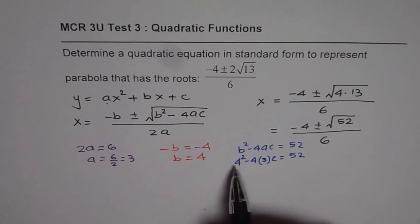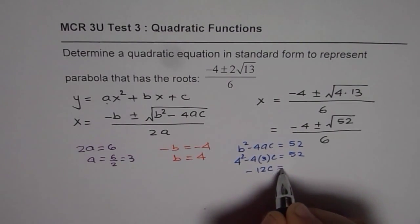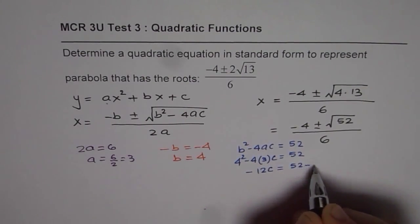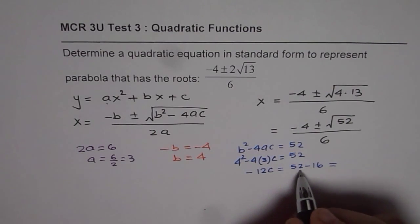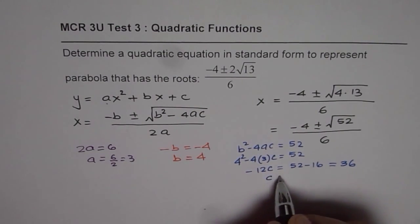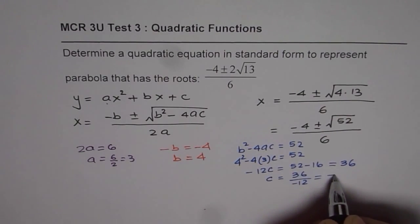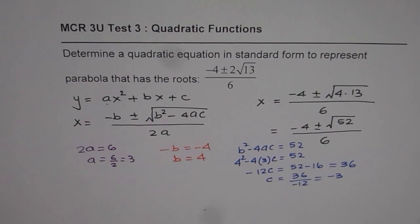Now we can solve this. 4 square is 16, so I can write this as minus 4 times 3 is 12. 12c equals 52 minus 16. And what is 52 minus 16? We have 36. So c should be equals to 36 divided by minus 12 which is minus 3. So we get c as minus 3.